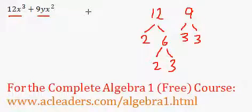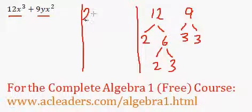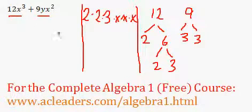Now I have 12x cubed can be seen as 2 times 2 times 3, according to our factor tree. 2 times 2 times 3 times x times x. Three x's because that's x cubed, of course.